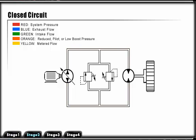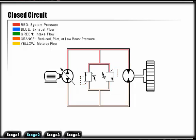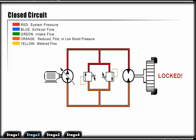In this circuit, two pressure relief valves are added to protect the system from overpressurization. When the hydraulic motor rotation is restricted or stopped, the high pressure relief valve opens and protects the system from overpressurization.